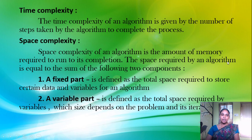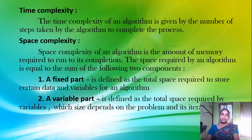The space required by the algorithm is equal to the sum of the following two components. If we are using a method, we have to measure two factors: the first is the fixed part and the second one is the variable part.